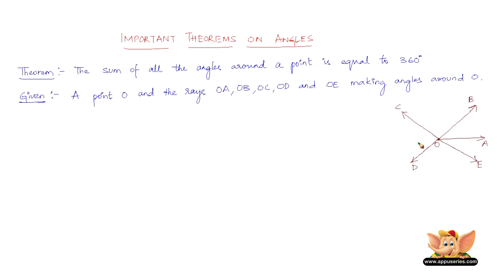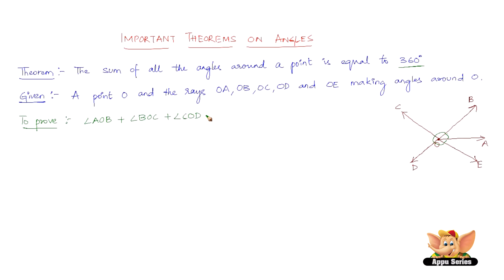What we have to prove is that the angles around point O — angle AOB, angle BOC, angle COD, angle DOE, and angle EOA — when added together, equal 360 degrees. So we have to prove: angle AOB + angle BOC + angle COD + angle DOE + angle EOA = 360 degrees.